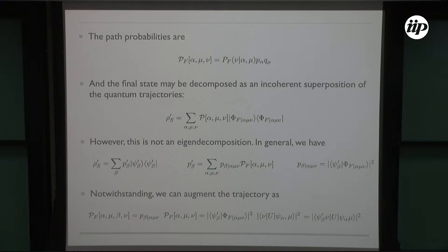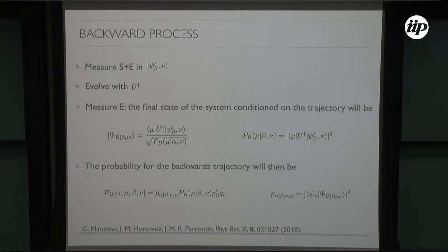Now for the backward process, what we do is measure the system and the environment. The system is in the final state, in a negative state psi beta prime in this basis. We measure the environment again in equilibrium, then we evolve with the time-reversed unitary, and then we do the same business: define the backward conditional state and the backward probability.